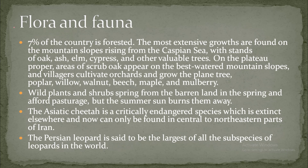Flora and fauna: seven percent of the country is forested. The most extensive growths are found on mountain slopes rising from the Caspian Sea, with stands of oak, ash, elm, cypress, and other valuable trees.